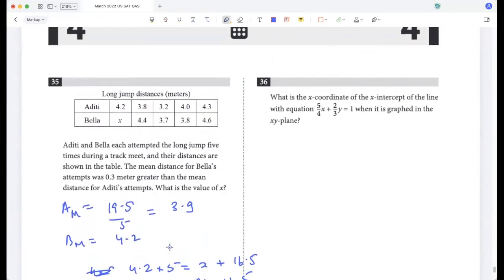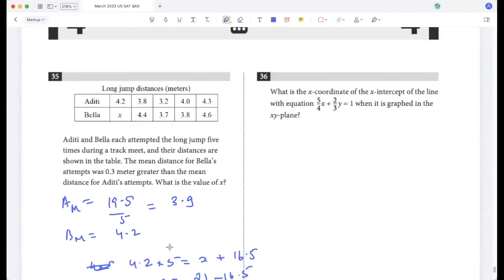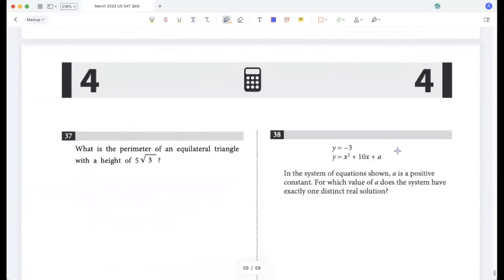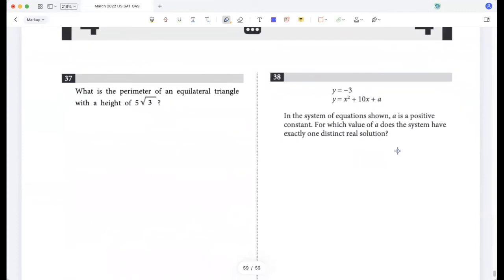What is the x coordinate of the x intercept? Put y as 0, so 5 by 4 x is 1, so x is 4 by 5. What is the perimeter of an equilateral triangle with the height of 5 root 3? The height is 5 root 3, and the height of an equilateral triangle is root 3 by 2a where a is the side, so that's 5 root 3, so a is 10, so the perimeter would be 30.